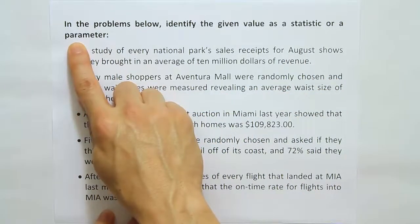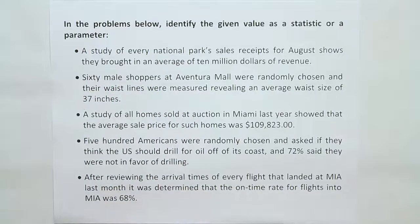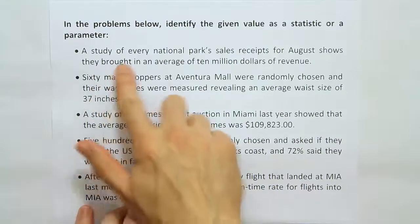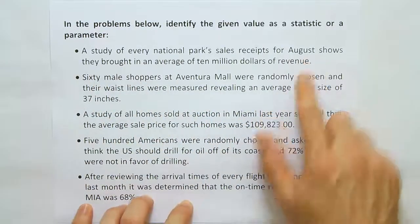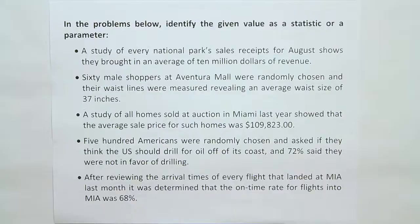In order to get something from the population, you have to conduct a census of the population. A census means you've looked at every single member of the population, and in that case, when you calculate something like an average, you've calculated a parameter. So let's read through these examples one by one and find the key phrase that will identify whether it's a statistic or a parameter.